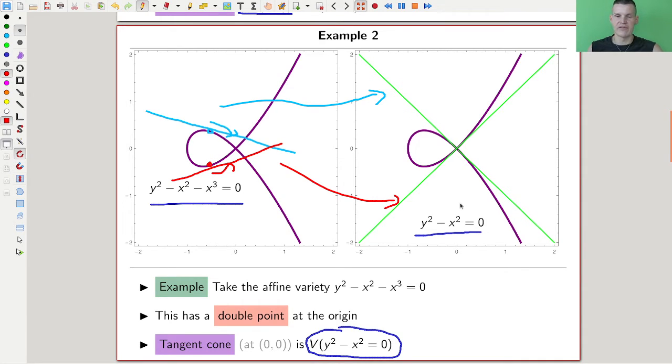The tangent cone takes all the possible directions to move into the point into account. What I'd like to highlight again is that we have a variety of the tangent cone given by, well, now you can actually see it already - it's part of the formula.